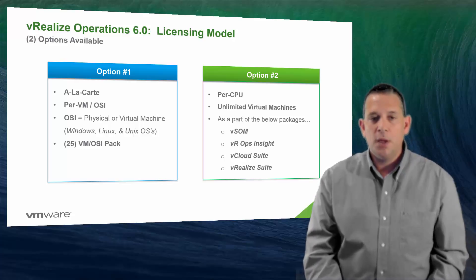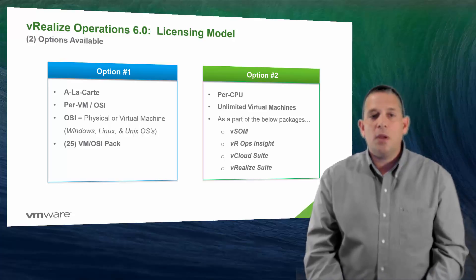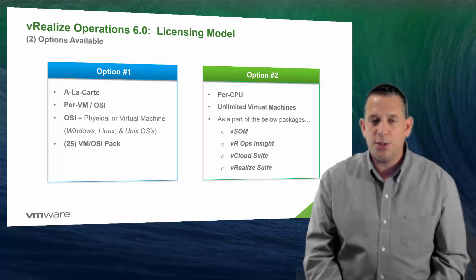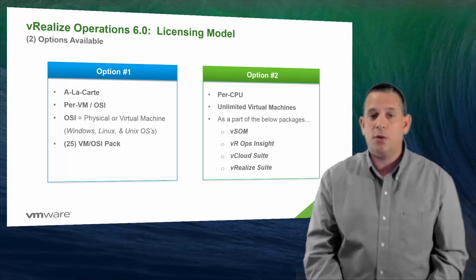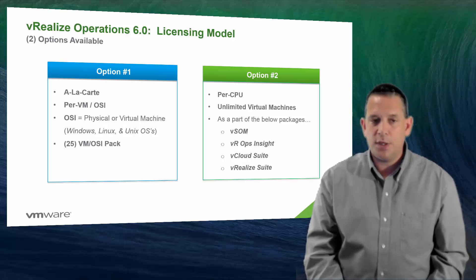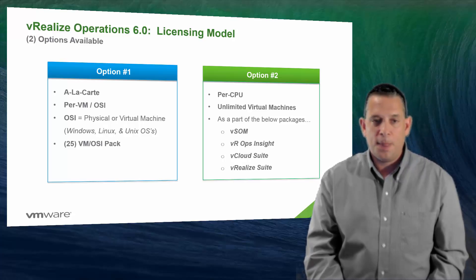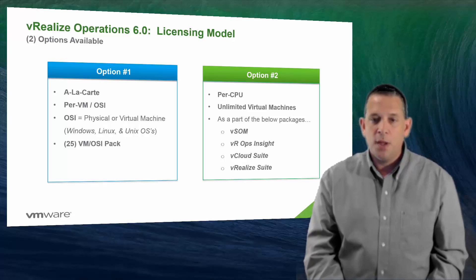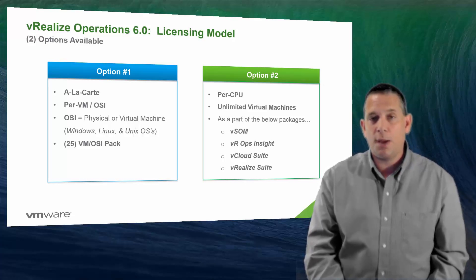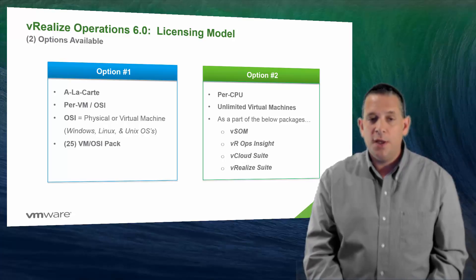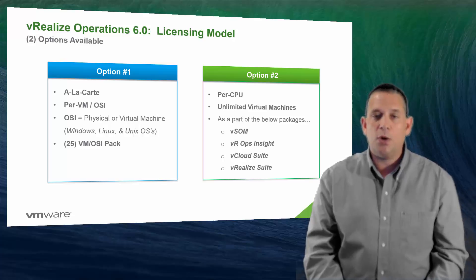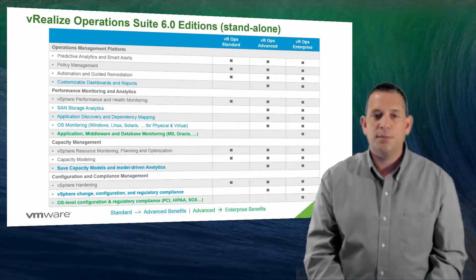Now let's look at the licensing models and packaging. For vRealize Operations you have two licensing models. The first option is sold as an à la carte or separate product on a per-OSI or VM basis — OSI being Operating System Instance, which can be a physical or virtual machine, including Windows, Linux, and Unix. This option is sold in a 25 VM or OSI pack. The second option is sold on a per-CPU basis, which allows for unlimited virtual machines to be monitored, and is offered as part of packages such as vSphere Operations Management (vSOM), vRealize Operations Insight, vCloud Suite, and vRealize Suite. We'll go into those different packages to see how they relate to the editions of vRealize Operations.